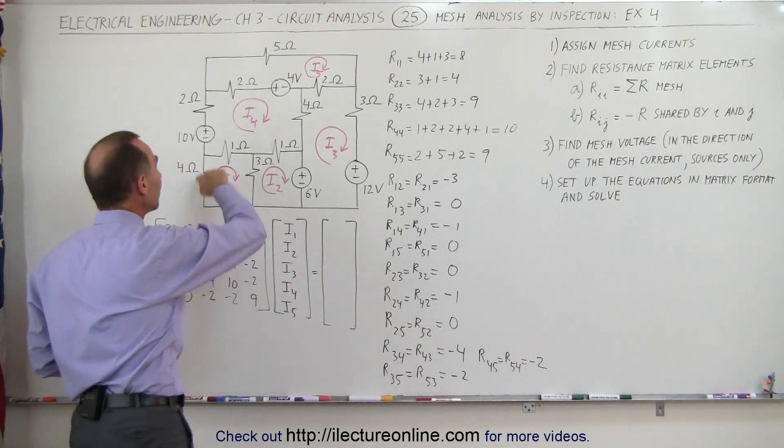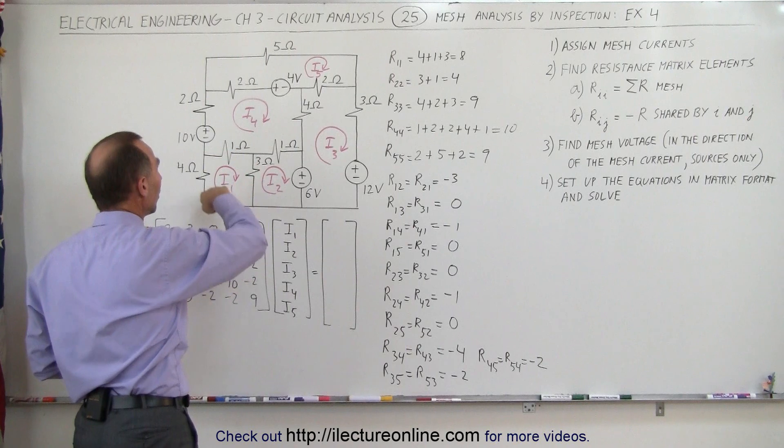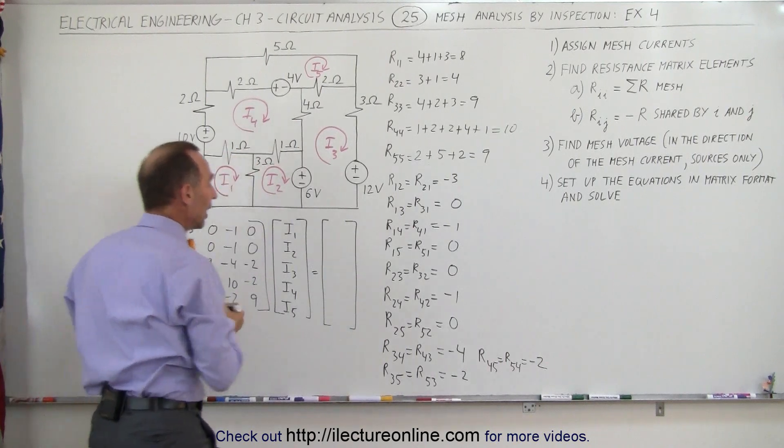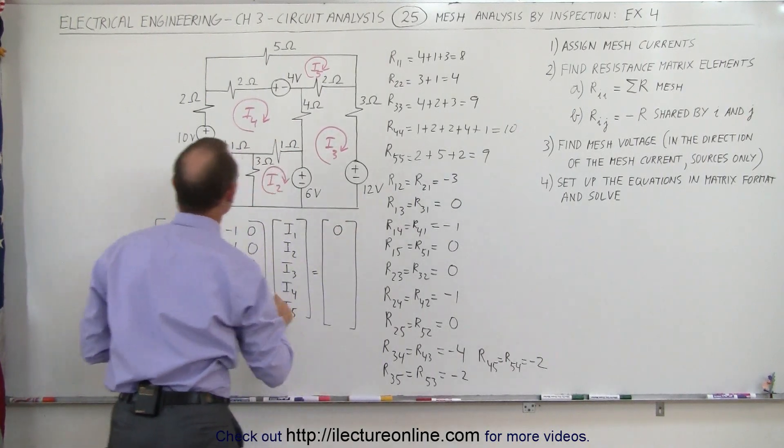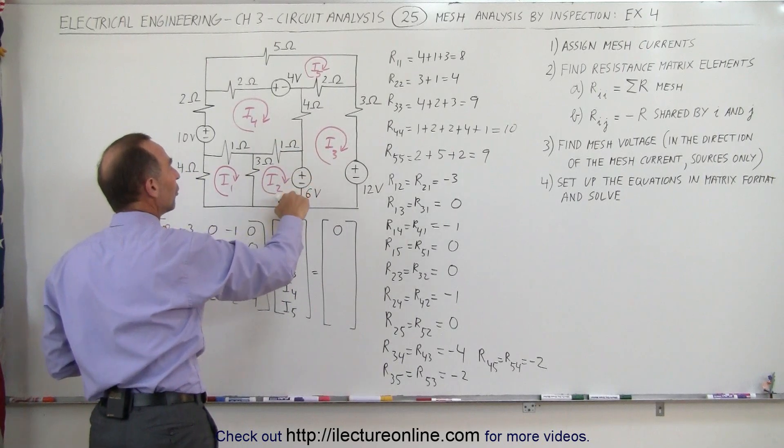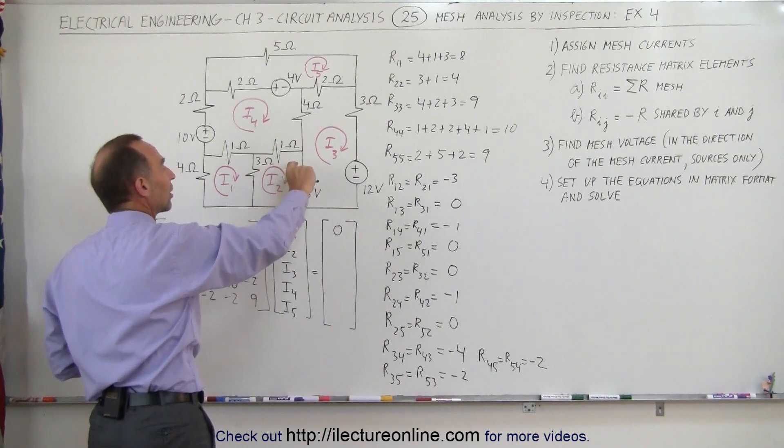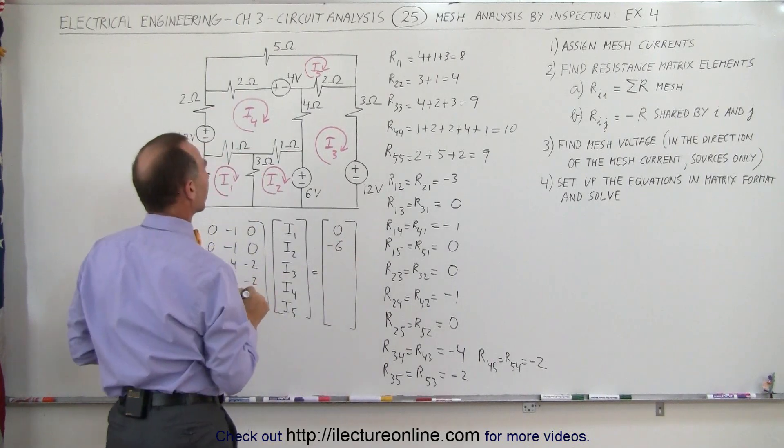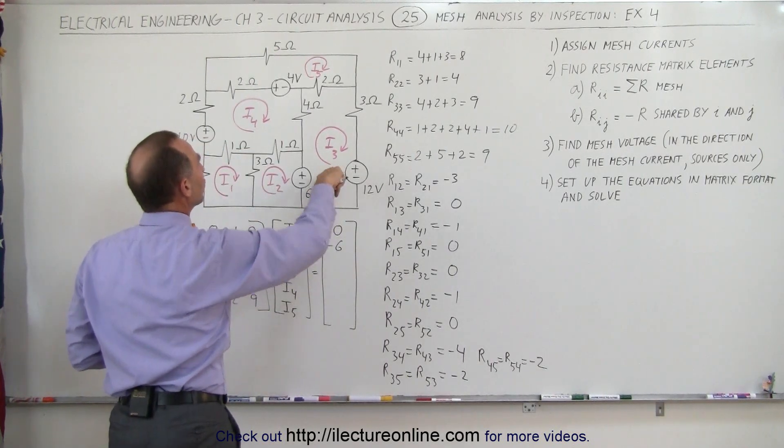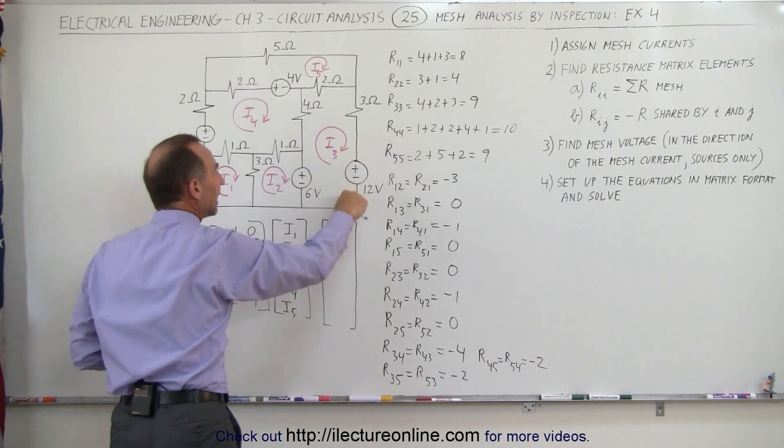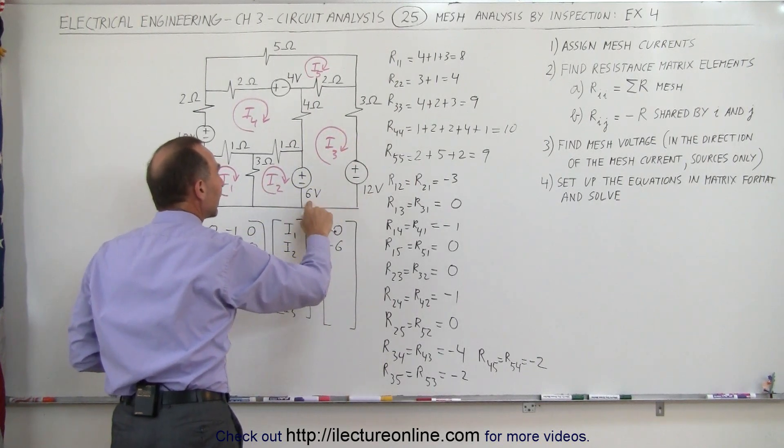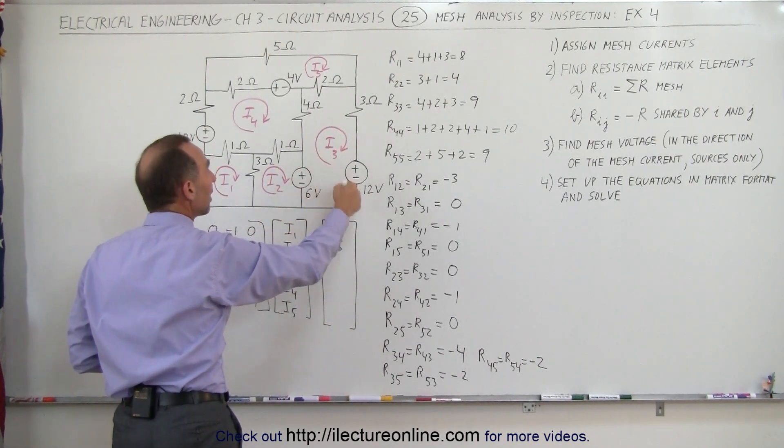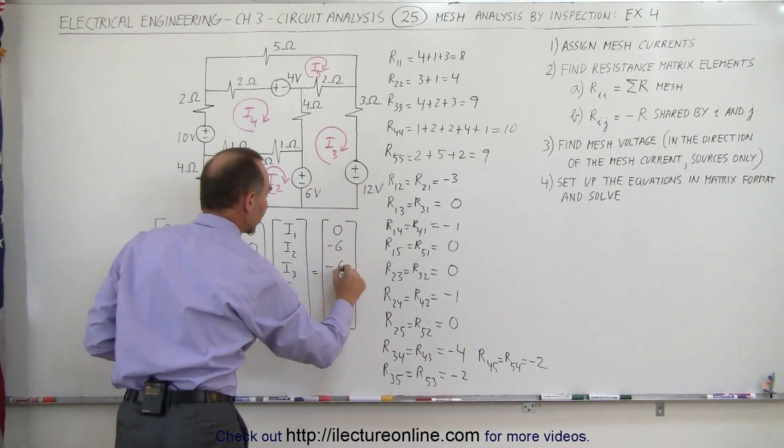We're going to travel around every mesh and add up all the voltages. Around loop 1 or mesh 1, we have 0 voltage sources. Around mesh 2, we have 1 voltage source, but we're traveling in the opposite direction, from positive to negative. That's minus 6. For the third loop, we travel around it clockwise. We go from positive to negative here, that's minus 12, but from negative to positive here, that's plus 6. Minus 12 plus 6 is still minus 6.